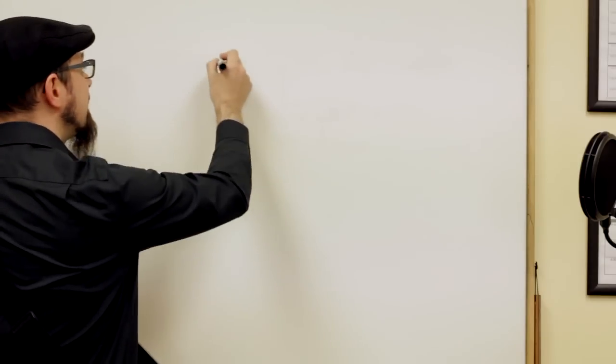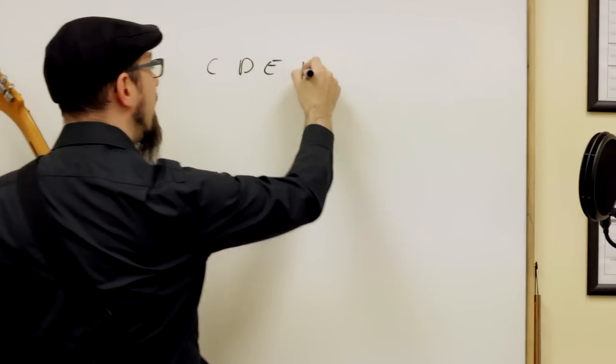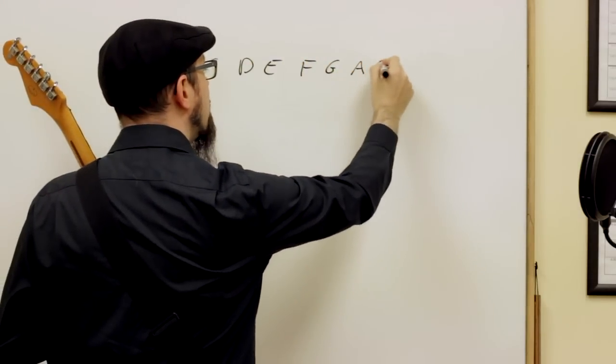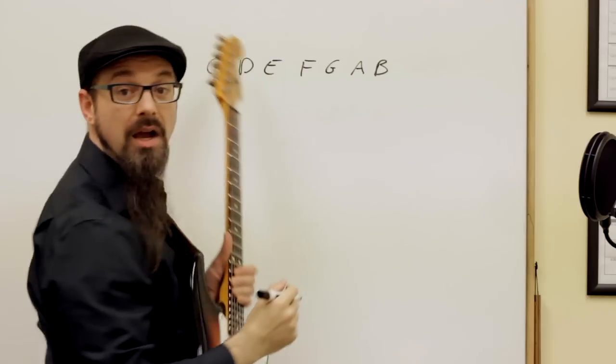The first function of sharps and flats is to tell you what notes are in the key. If we are working in C major, the notes are simply the letters: C, D, E, F, G, A, B.